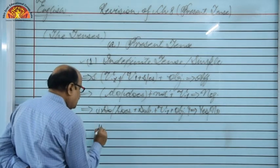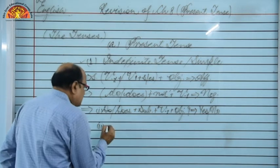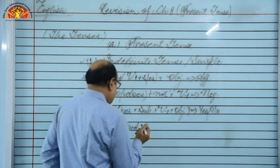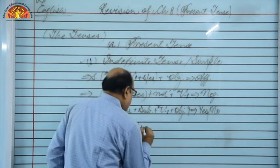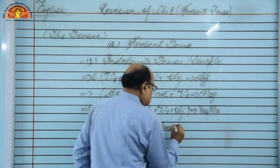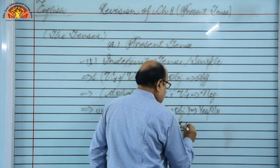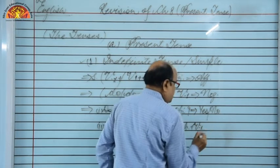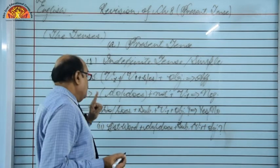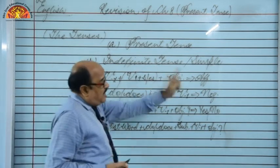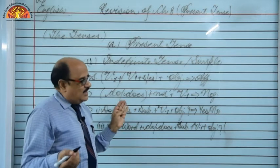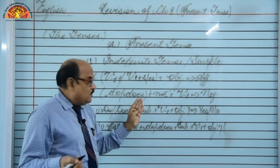If we use the helping verbs in the beginning — do/does + subject + V1 + object — it looks like an interrogative sentence. This is the first kind of interrogative sentence, which begins with a helping verb. Whenever we find this kind of interrogative sentence, mind it — these questions always demand their answers in yes or no only. For example: 'Do you like coffee?' — 'Yes, I do.' or 'No, I don't.' 'Does he go to school regularly?' — 'Yes, he goes.' or 'No, he doesn't.'